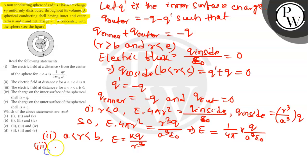Let's solve statement 3. Electric field for B < R < C: as told earlier, E is equal to 0.